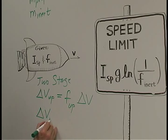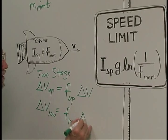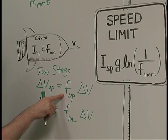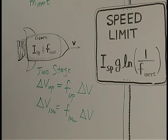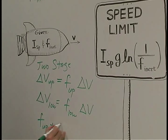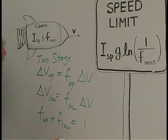The velocity that we need from the lower stage, we'll write F low, times the total delta V that we need, which would, if this number is 50%, then this is the other 50%, because these two fractions, F upper stage plus F lower stage, of course, have to add up to one.